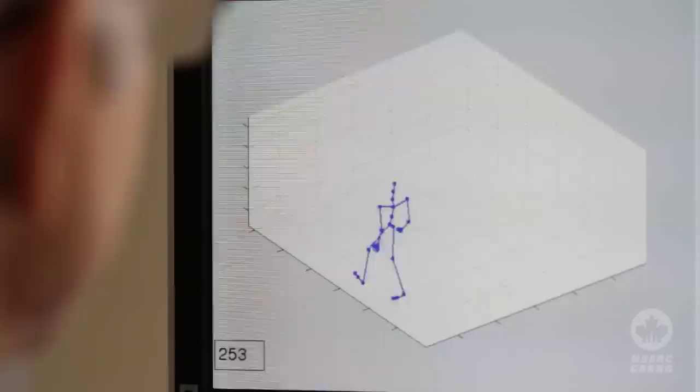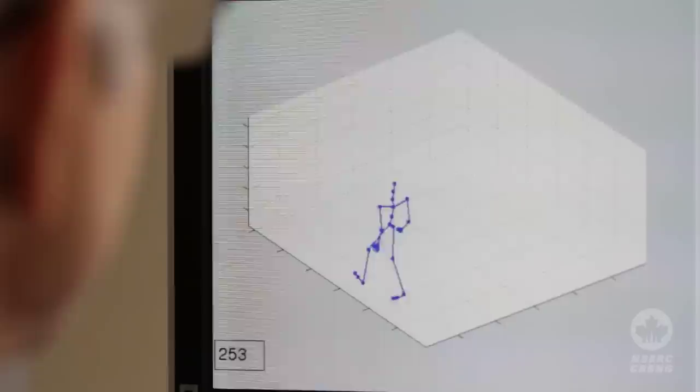So this is the neural net imagining a person walking normally, and the video is being generated from the internal states of the neural net. It's deciding what direction to go in and where to put its feet.